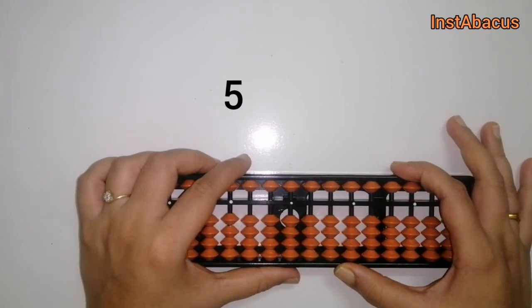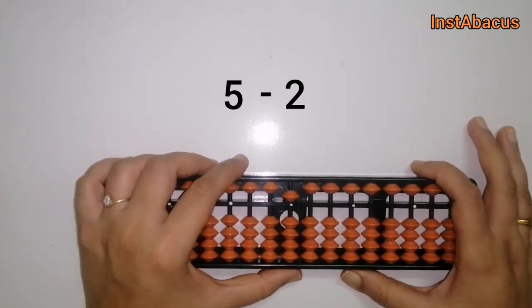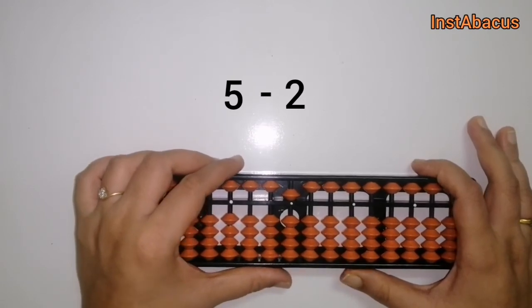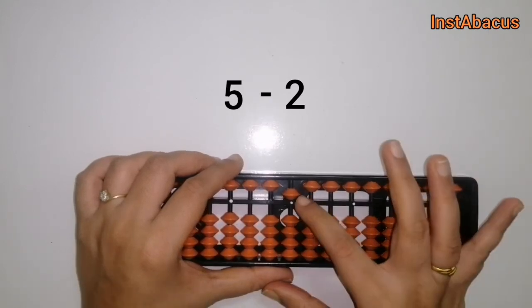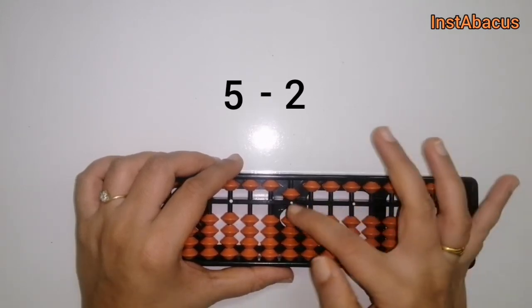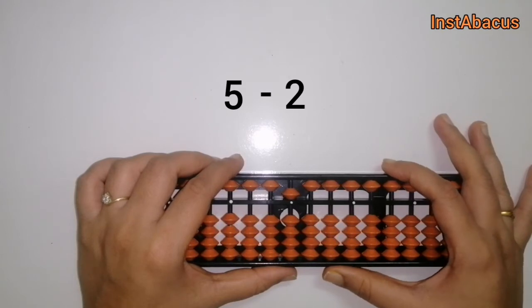5 minus 2. So this is 5 on our abacus, and now from this we are going to subtract 2. And again, we don't have enough earthly bits here to move away from the answering bar, right? So what are we going to do?